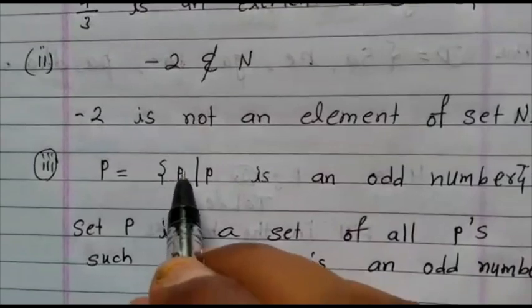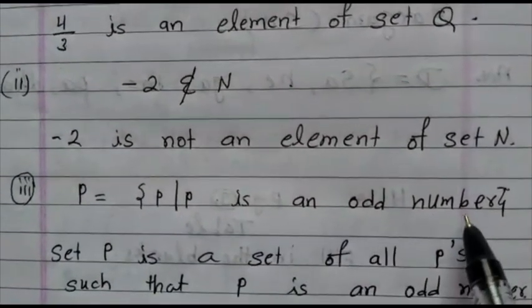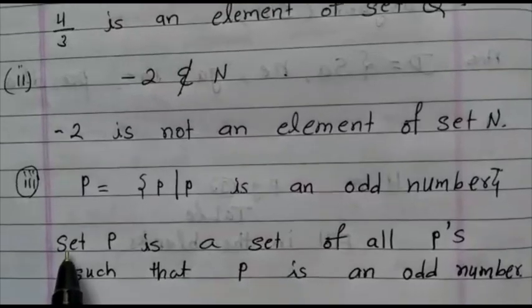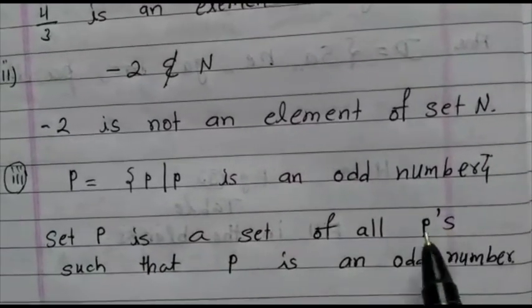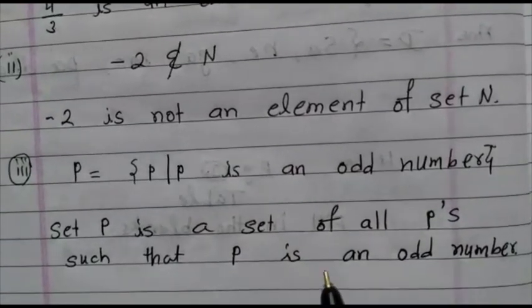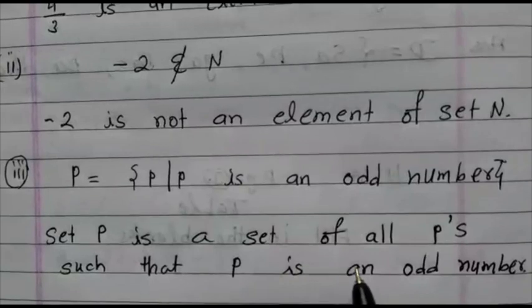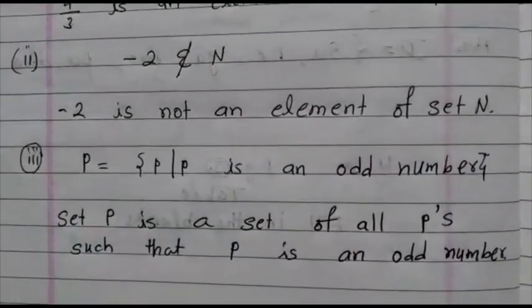Third, P is equal to P of P is an odd number. How to write the answer? Set P is a set of all P's such that P is an odd number. That means all the elements of P are odd numbers.